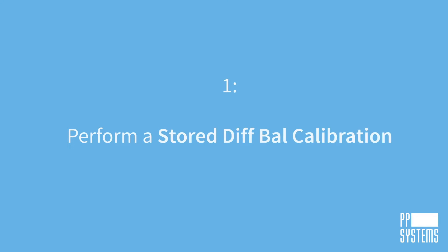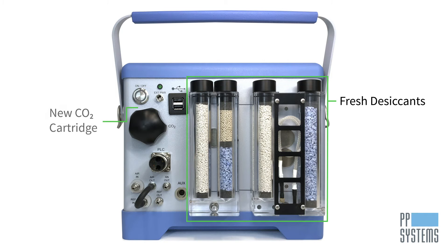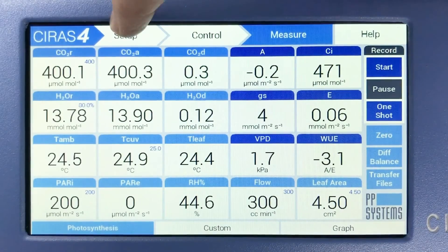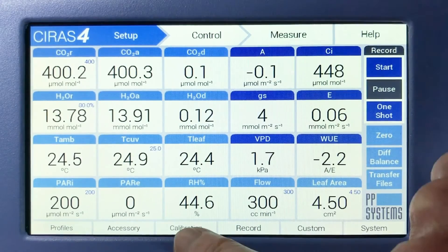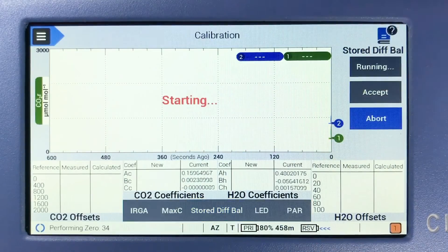We begin by performing a stored DIF-BAL calibration to allow the CIRIS-4 to have accurate offset information applied continuously throughout the linear ramp. Install fresh desiccants and a new CO2 cartridge in the CIRIS-4 and allow it to warm up for 30 minutes. Navigate to Setup, Calibration, Stored DIF-BAL, and tap Start.